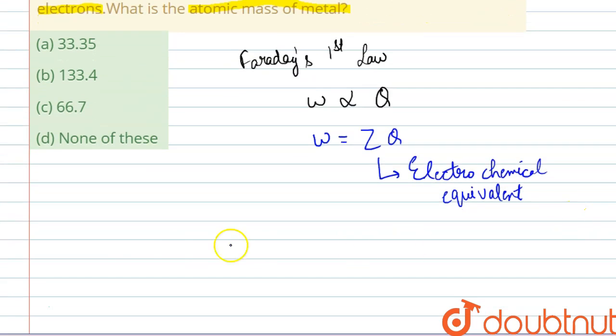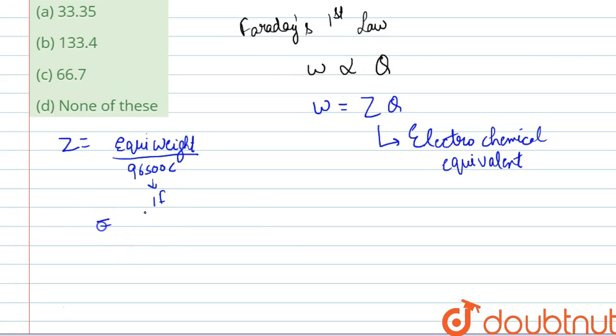Now what is the value of z? The value of z can be calculated by equivalent weight divided by 1 Faraday, that is 96500 coulomb. This is termed as 1 Faraday. Now we know that we can write equivalent weight as molar mass by n factor. It will be n into 96500. Now this n factor is the number of electrons involved.